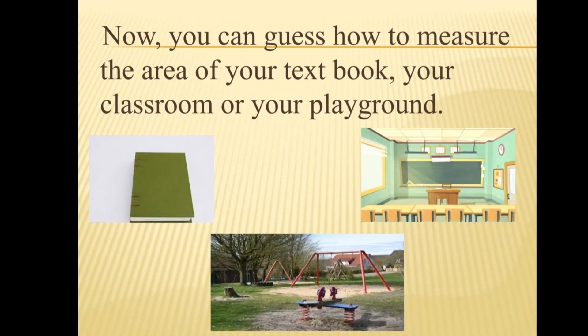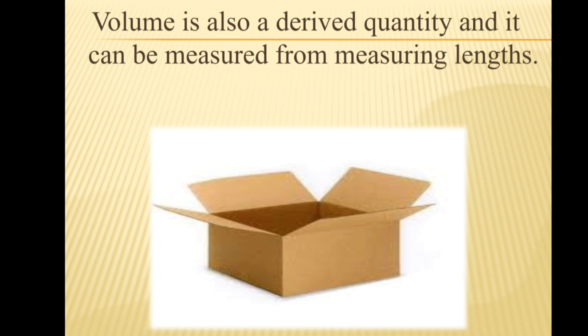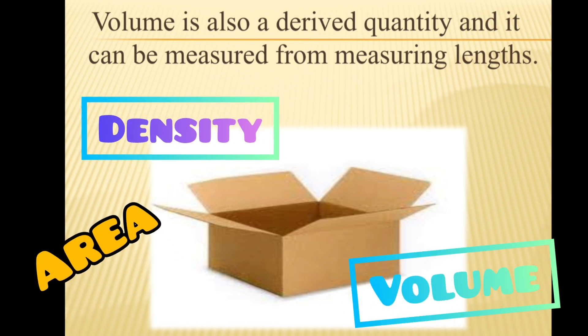Can you guess how to measure the area of your textbook, classroom, and playground? You need the values of length and breadth to find the area of these things. Volume is also a derived quantity and can be measured from measuring lengths. A derived quantity is one that cannot be measured directly - quantities calculated from two or more measurements. Three examples of derived quantities are area, volume, and density.